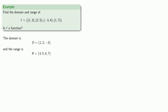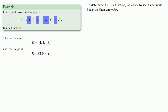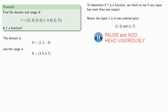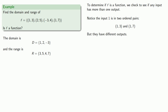To determine if f is a function, we check whether any input has more than one output. The inputs are the first terms in all the ordered pairs. Notice that the input 1 appears in two ordered pairs: (1, 3) and (1, 7), but they have different outputs. Since the input 1 has two possible outputs, 3 and 7, this is not a function.